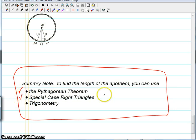So we just used 30, 60, 90, the other one is 45, 45, 90. And thirdly, if all else fails, and you have some angles that you don't recognize, you can use trigonometry.